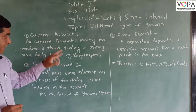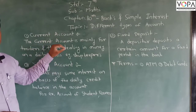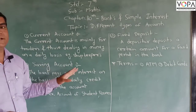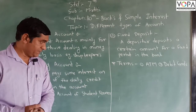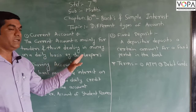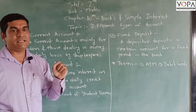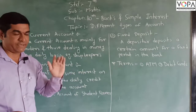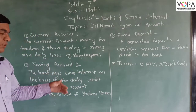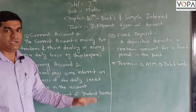The main difference between both accounts: in the current account we don't get interest, and in the saving account we get interest from the bank. The current account is opened by shopkeepers because they trade on a daily basis and number of times they trade. For students and farmers, they open a saving account in the bank.